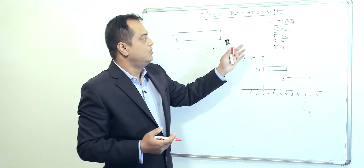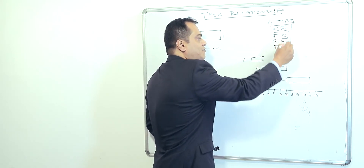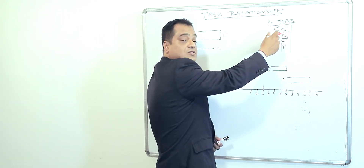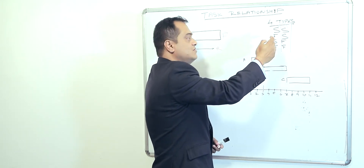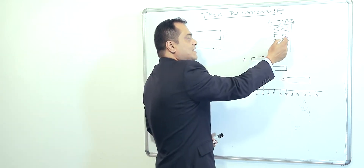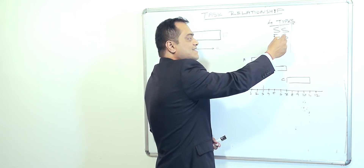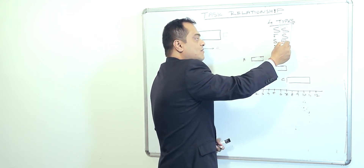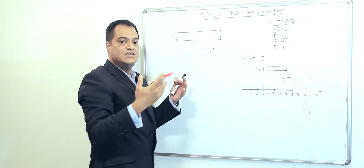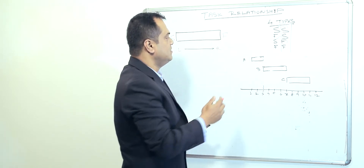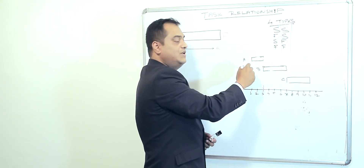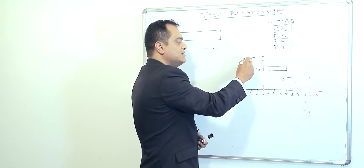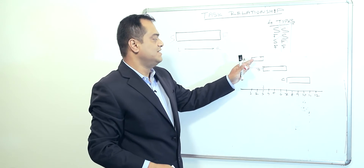The first relationship is Start to Start. The subsequent task is dependent on the previous one, meaning the next start cannot happen until the previous start takes place. So let's say A and B are related to each other as Start to Start. We will plot a relationship between A and B as Start to Start, meaning B cannot begin until A has been started.